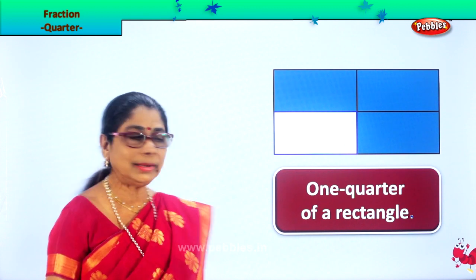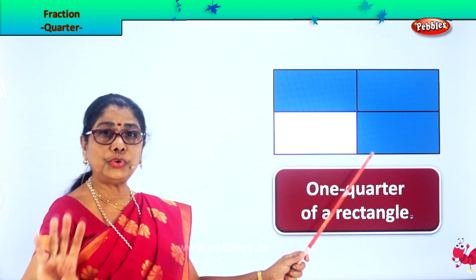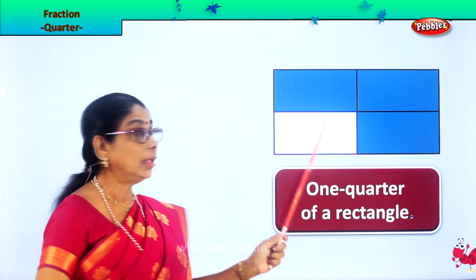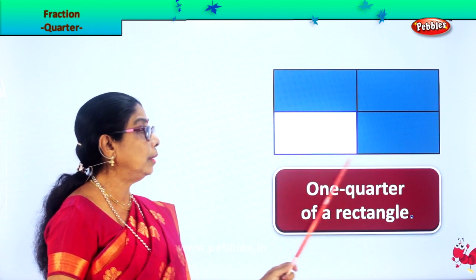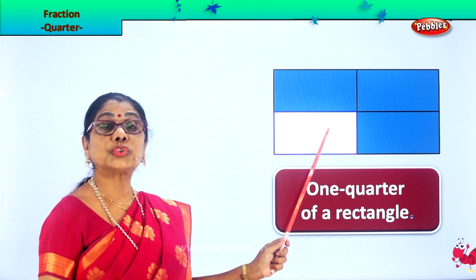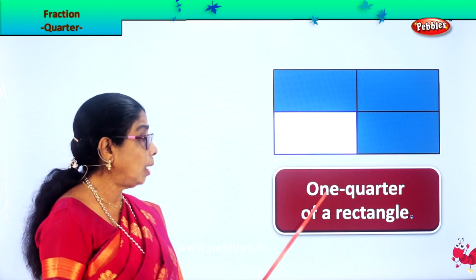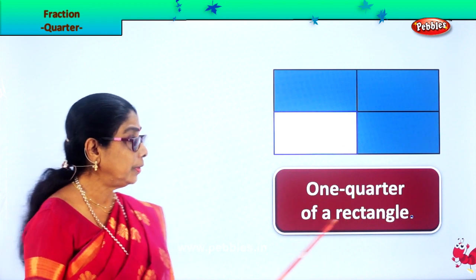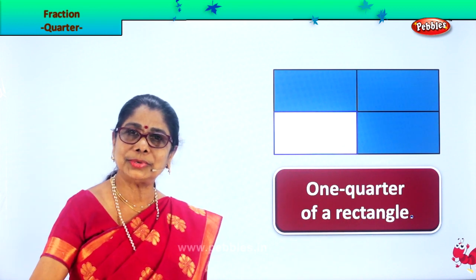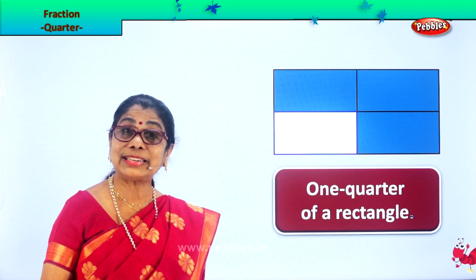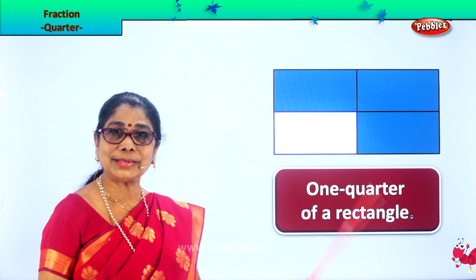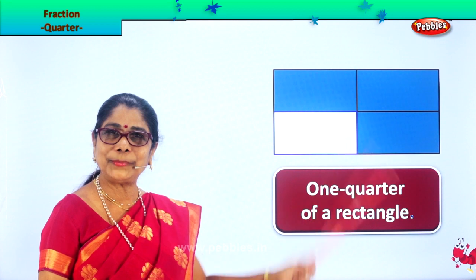We have divided the rectangle into four equal parts — one, two, three, four. So this part alone is called one quarter of a rectangle. Now, I hope you understood in fraction what is the meaning of one quarter of a shape. Let's look at another shape.